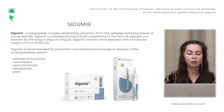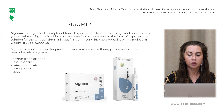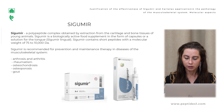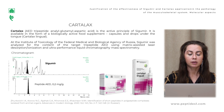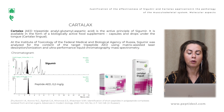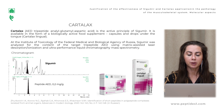The first peptide bioregulator is Sigumir. It is a polypeptide complex obtained by extraction from the cartilage and bone tissue of young animals. Sigumir is recommended for prevention and maintenance therapy in diseases of the musculoskeletal system, such as arthrosis and arthritis, rheumatism, osteoporosis, osteochondrosis, and bone pathology. At the Institute of Toxicology of the Federal Medical and Biology Agency of Russia, Sigumir was analyzed for the content of the target tripeptide IAD.